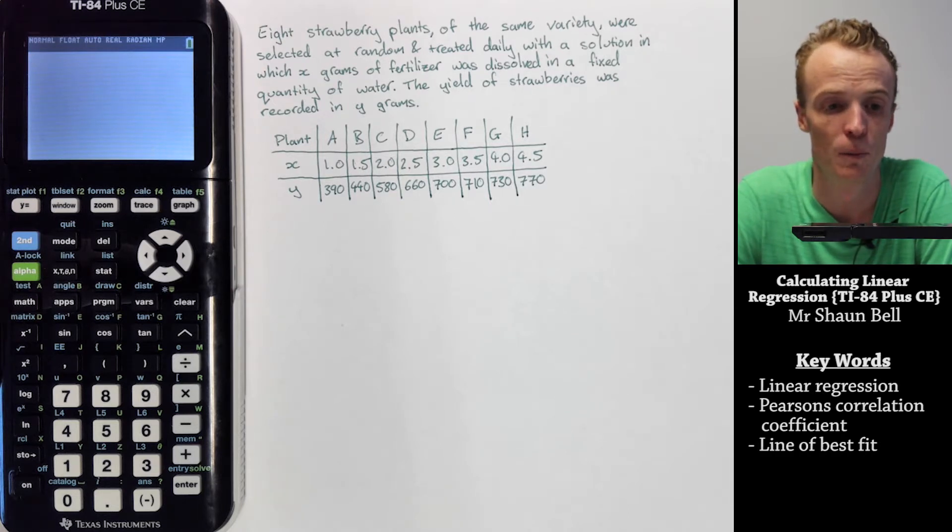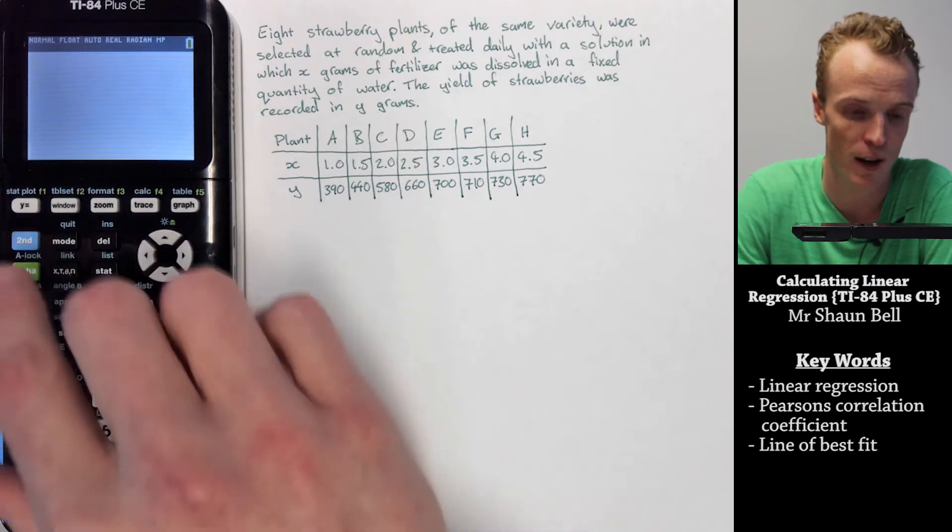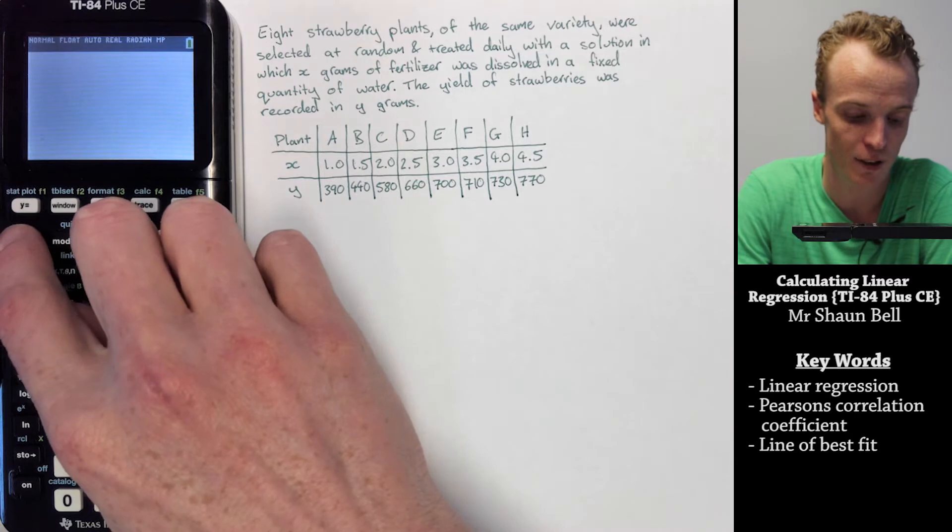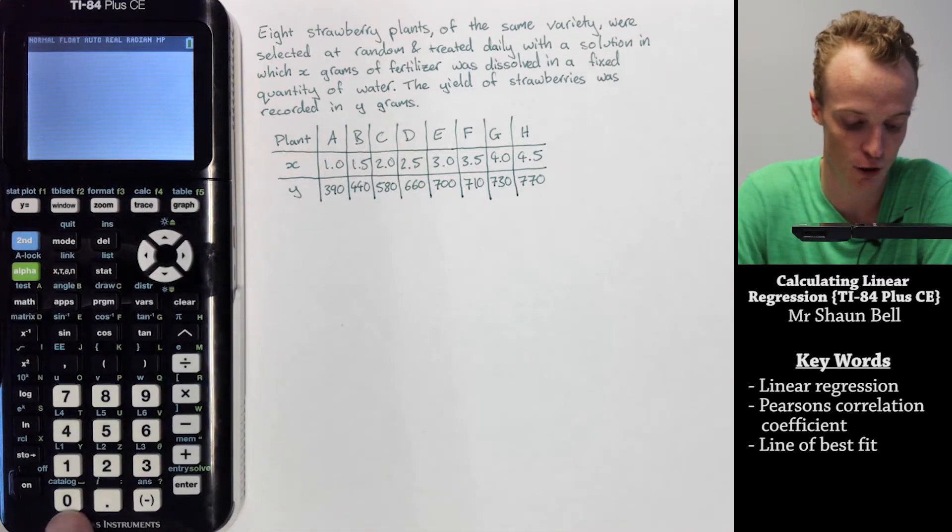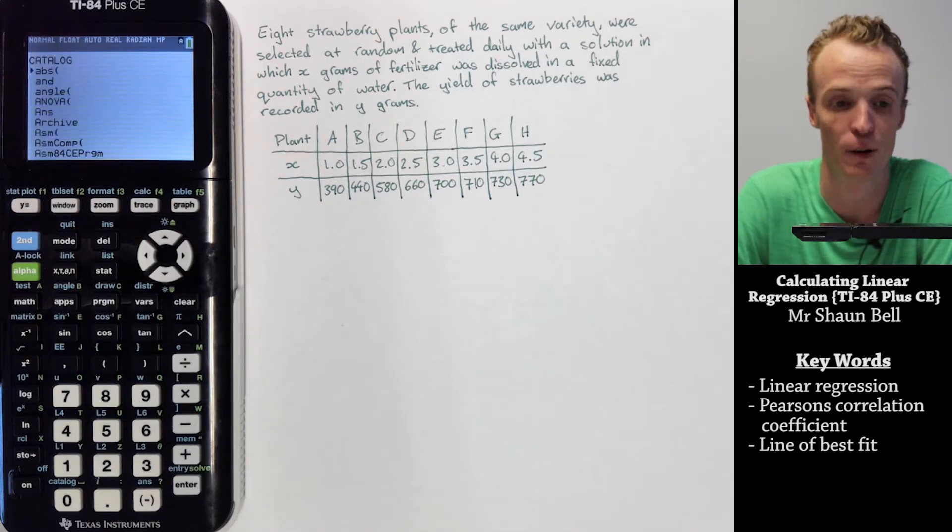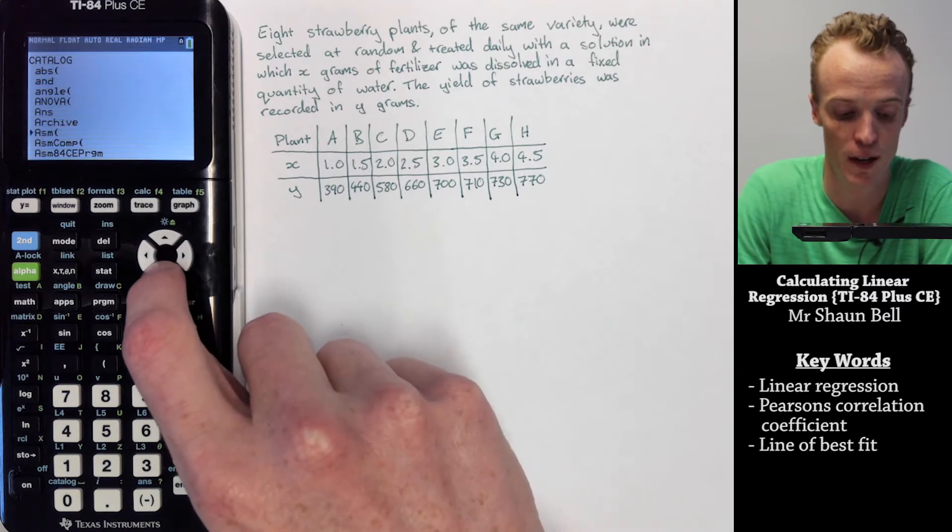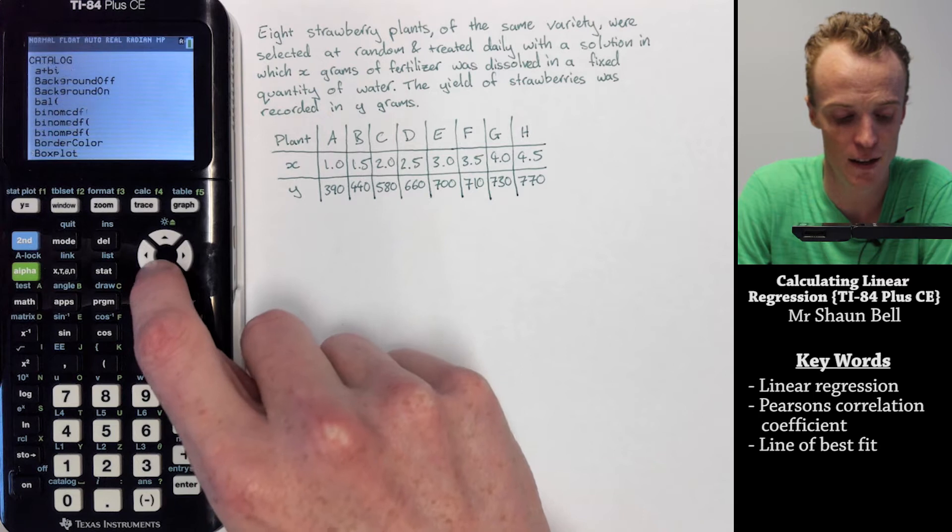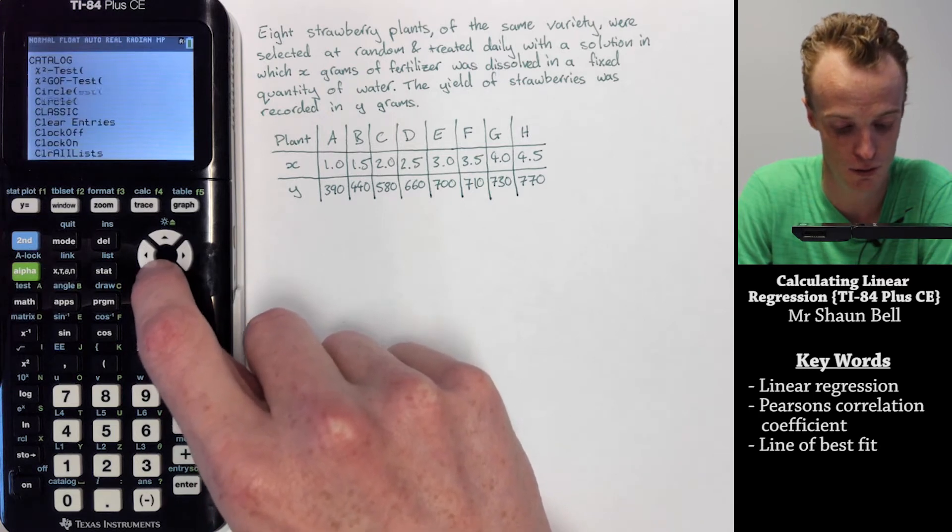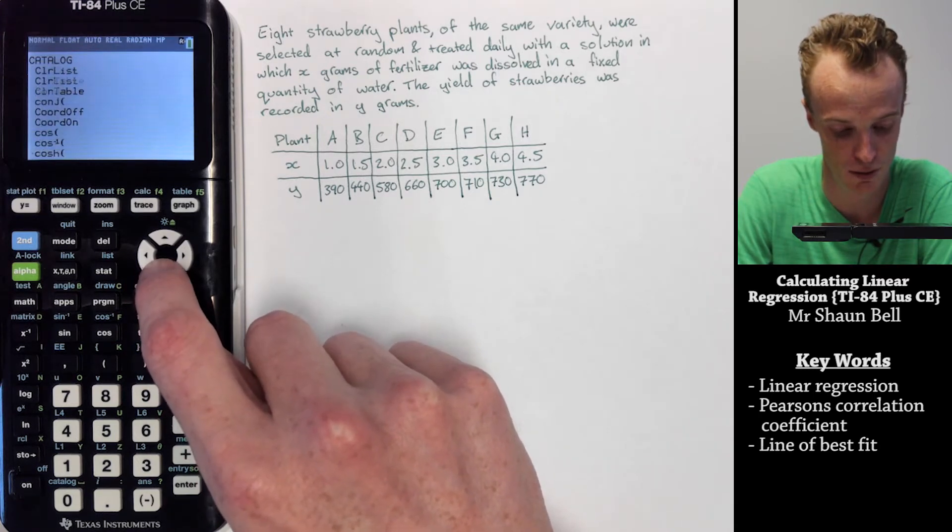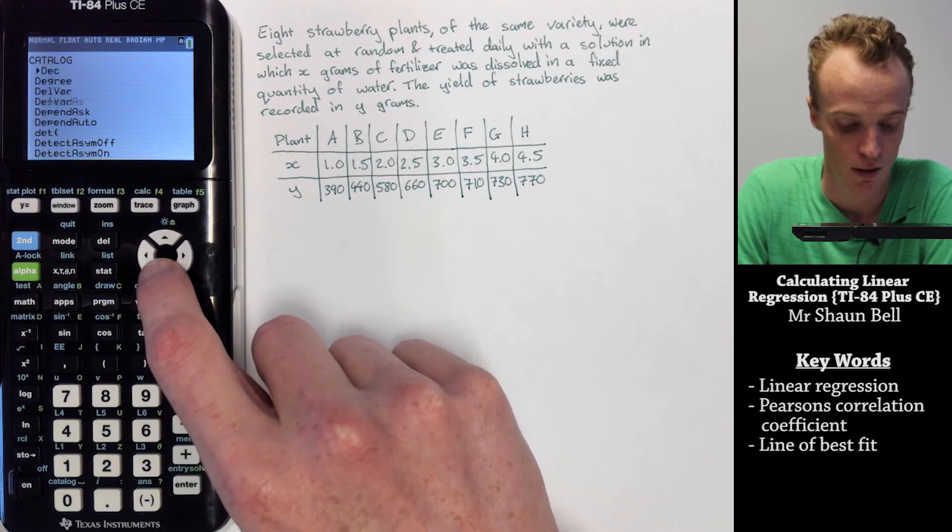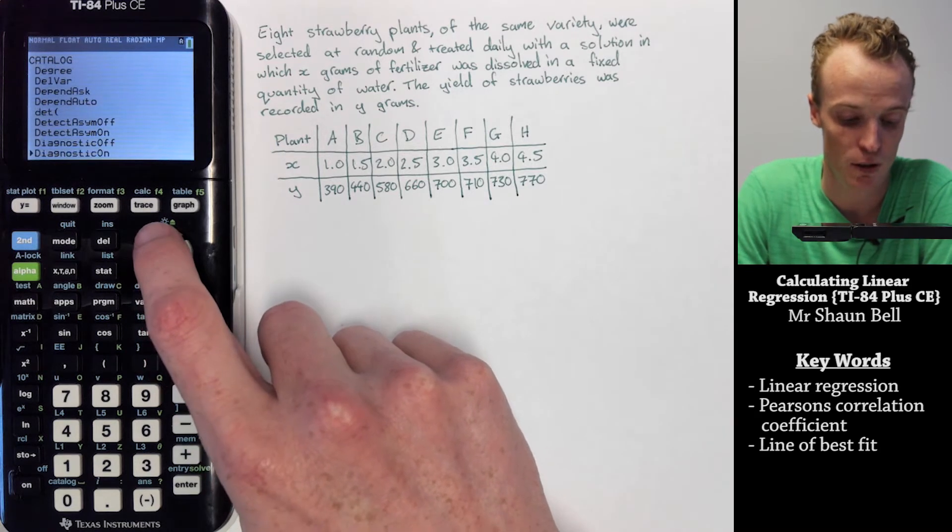The first thing to start with on your calculator is to enable Pearson's coefficient. You need to hit the second function and go to the catalog, which is number 0, and scroll down until you get to the D section.